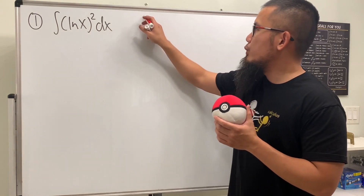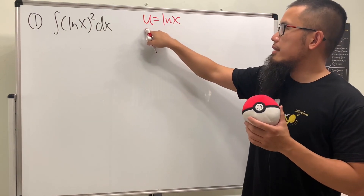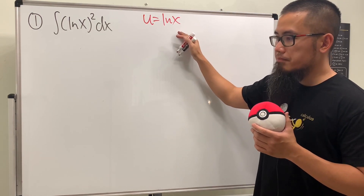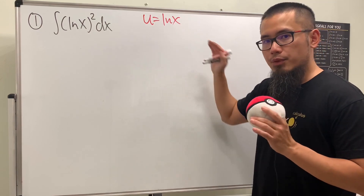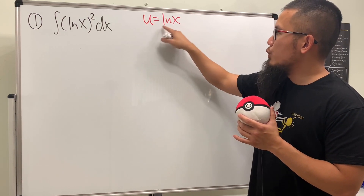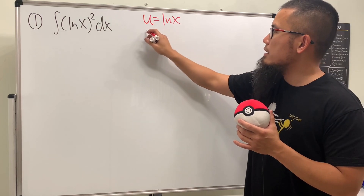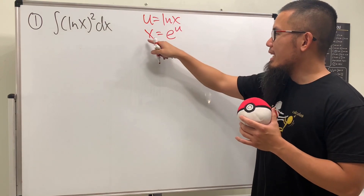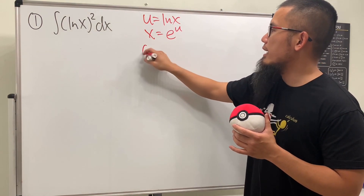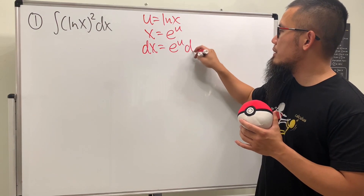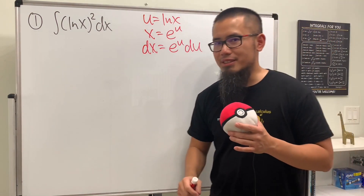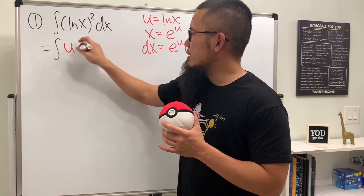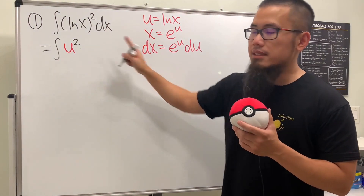Perhaps we'll let u equal the inside first and see what happens. We can differentiate and say du is equal to 1 over x dx. But if you do it this way, it's easier. When we have u equal to ln x, this is the same as saying x is equal to e to the u, the inverse function. And then we differentiate and say dx is equal to e to the u du. Now take this integral to the u world: ln x is the u, raise that to the second power, and dx is e to the u du.